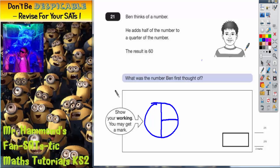So when he adds a half to a quarter he's talking about this bit here. When he adds a half to a quarter he's actually getting three quarters, and that is worth 60.